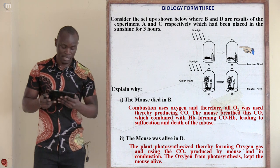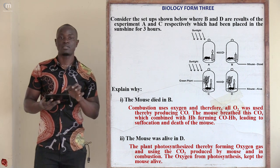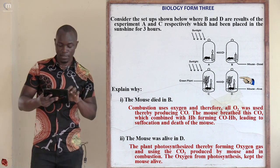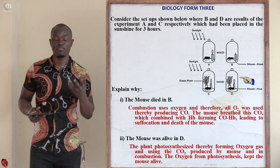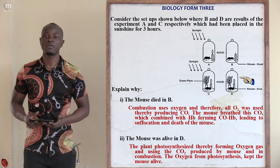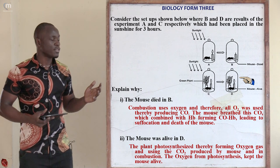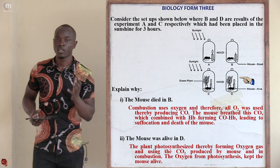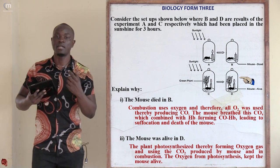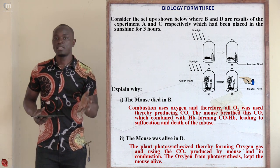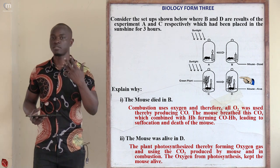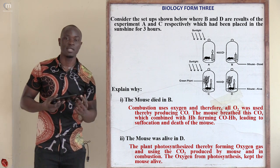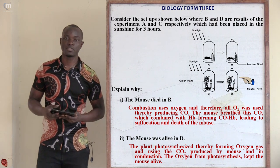In apparatus C and D, there is sunshine, a growing plant, a mouse, and a burning candle. The mouse in D is alive. During the light stage of photosynthesis, plants take in carbon dioxide and release oxygen. So the plant was actively taking in carbon dioxide from the candle and mouse and releasing oxygen, providing both the mouse and candle with oxygen to continue their respective processes.